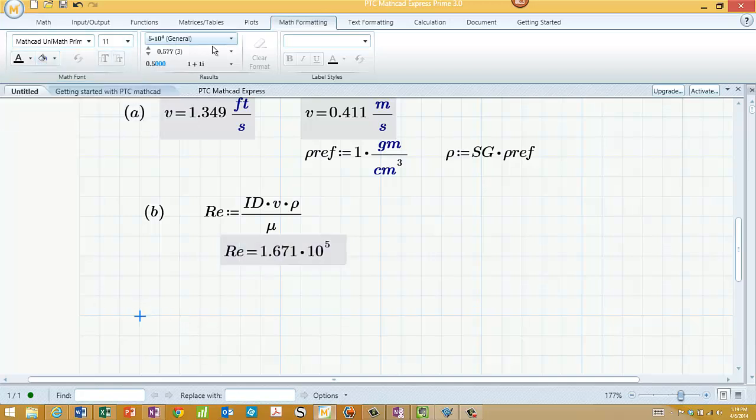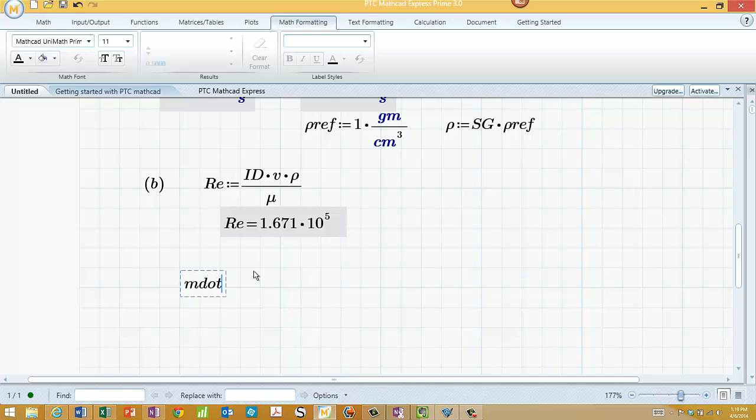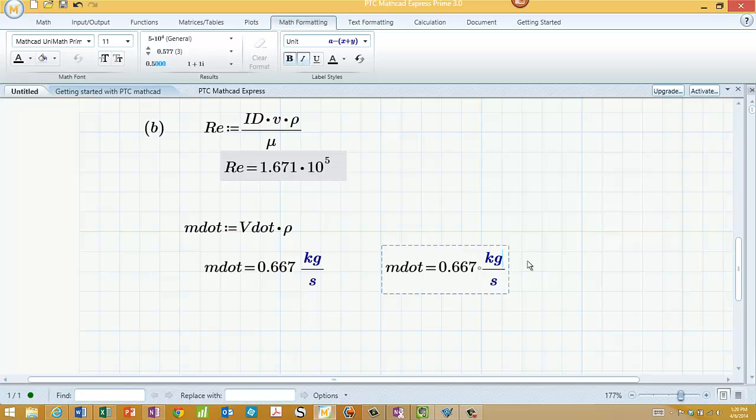And the last one is M dot. It's an intermediate value. Is just equal to the volumetric flow rate, V dot, times rho. And M dot then equals. Okay, let's do that.